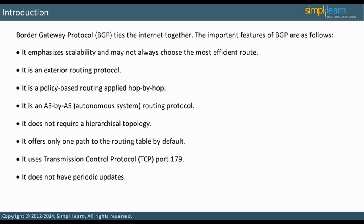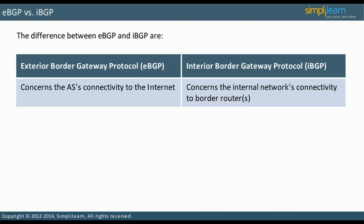Let us look at the difference between eBGP and iBGP. eBGP concerns your autonomous system's connectivity to the Internet, that is, to other autonomous systems. iBGP concerns your internal network's connectivity to your border router or routers. A border router is at the edge of an AS and exchanges routing information with other AS's.